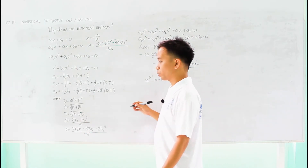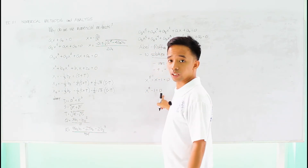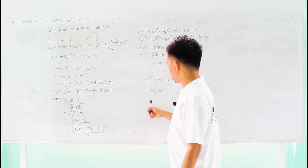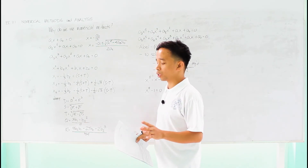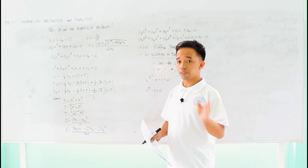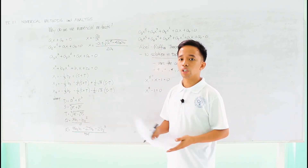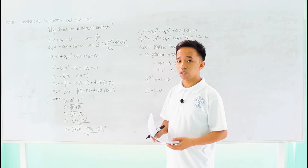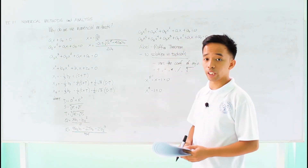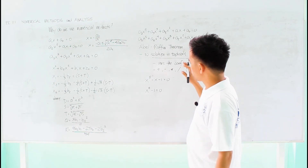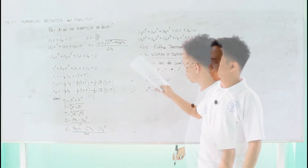But there are examples which are solvable. For example, if you have an equation of degree five or higher which can be factored, such kinds can be solved. Again, most equations of degree five or higher have no solution in radicals.